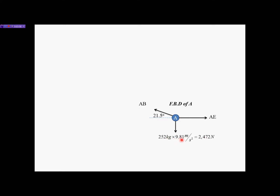To convert the 252 kg mass into a force, I multiply by the acceleration of gravity, 9.81 m/s², which gives a magnitude of 2472 Newtons. So now we have a force, not a mass. The magnitude is 2472 N, the direction is vertical, the sense is downward, and the point of application is at joint A.